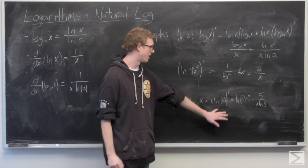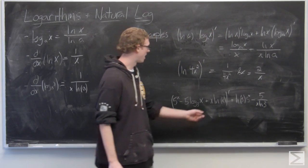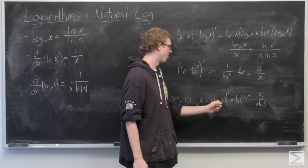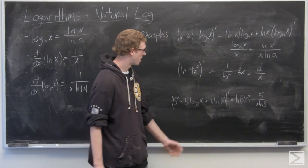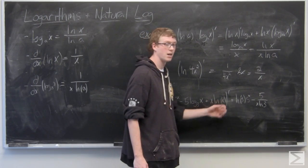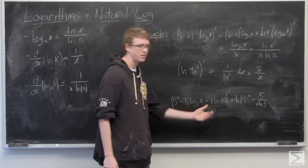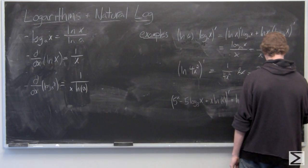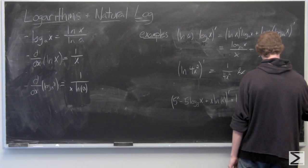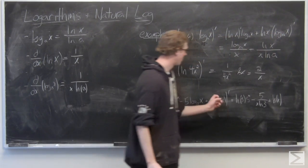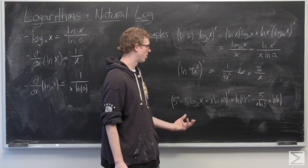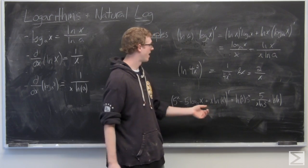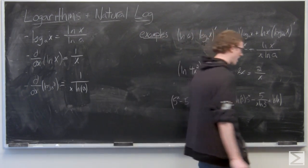And then this last term, we're going to need to use the product rule. We're going to have x times the derivative of ln x, plus the derivative of x times ln x. So the derivative of x is just 1, so we're going to add an ln x. And the derivative of ln x is 1 over x, and we're multiplying that out by x, so it's just going to be add a 1 for that term.